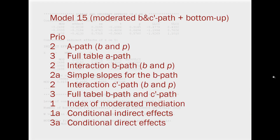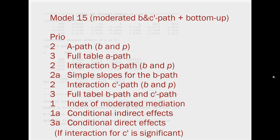As a short summary for the bottom-up approach: for the A path, we definitely report the coefficient and the p-value for the A path, and we could report the full table. For the B and C' path, we definitely report the interaction for the B path. If it's significant, we could report the simple slopes for the B path. We could report the interaction for the direct effect C'. And if we want to go even more into detail, we could report the full table. For the key information, we must report the index of moderated mediation, and if it's significant, the conditional indirect effects. We could also report the conditional direct effects.